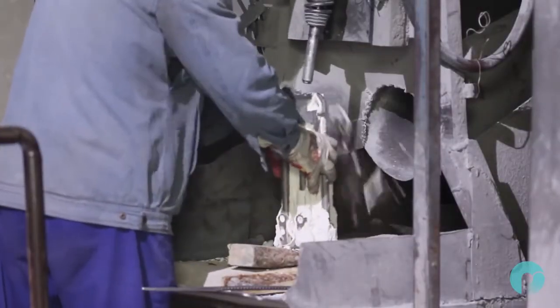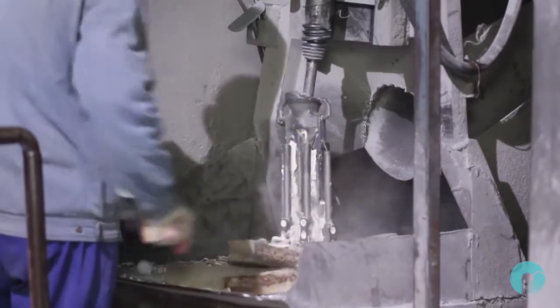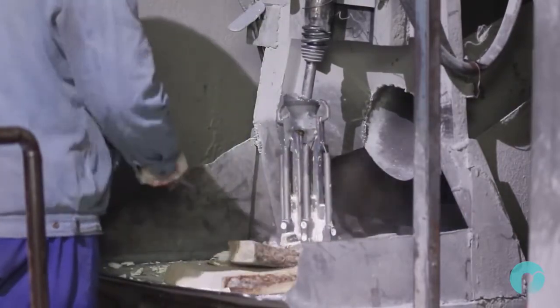Once cooled, the steel can be removed from the mold. This is done using a pneumatic jack, which shakes the brittle mold from the cast.